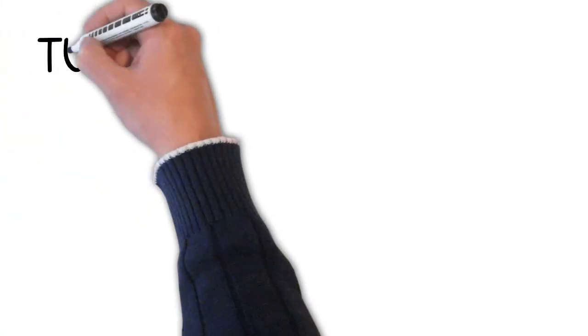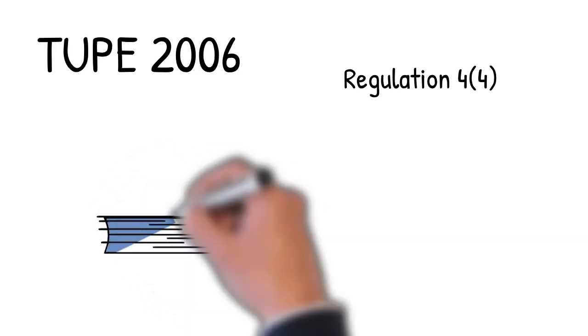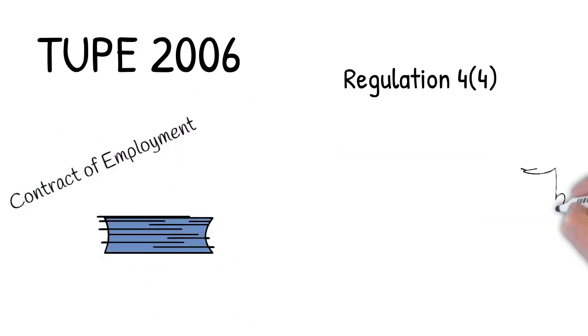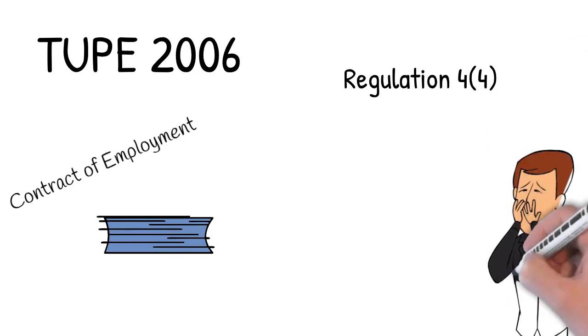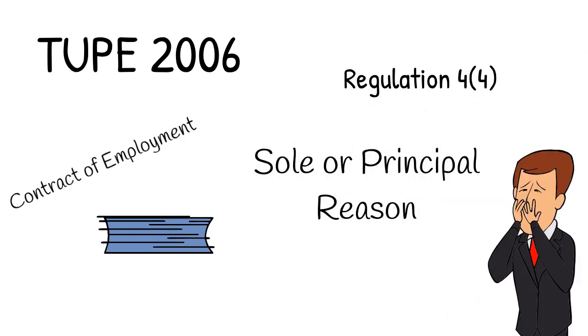And this rule was eventually enshrined in TUPE 2006 Regulation 4.4, which says that any purported variation in a contract of employment that's being transferred under TUPE will be void if the transfer is the sole or principal reason for the variation.